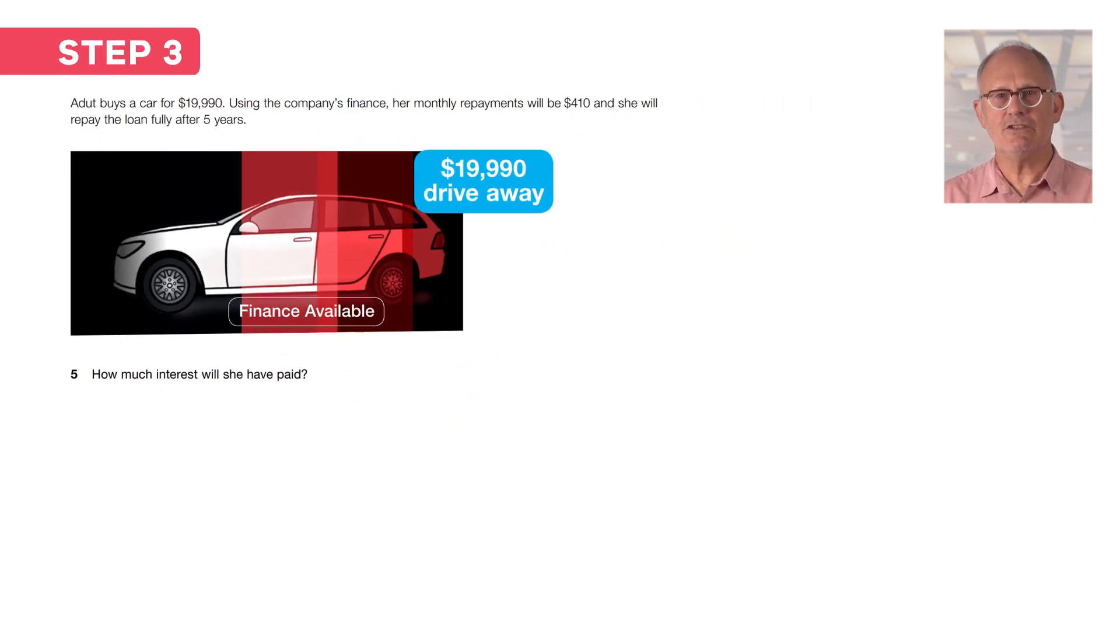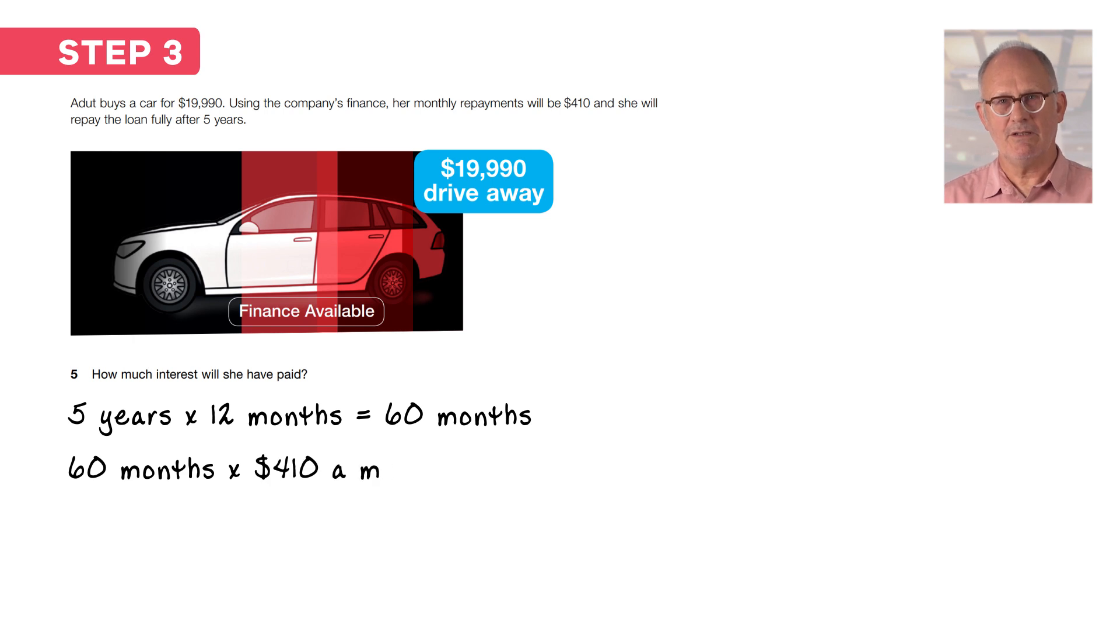The third step is that you now need to do the maths and work out the answer. First work out how much she paid in total for the car, which is five years times 12 months equals 60 months, and then 60 months times $410 a month which equals $24,600. Now you need to take away the cost of the car, that is take the $19,990 from the $24,600, and $24,600 minus $19,990 equals $4,610, and you probably needed to use your calculator to check that. So Adut paid $4,610 in interest.